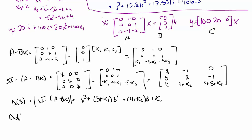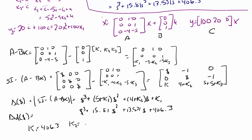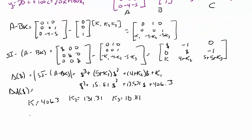We now equate coefficients with the desired characteristic equation S cubed plus 15.81 S squared plus 135.31 S plus 406.3. This gives K1 equals 406.3, K2 equals 131.31, and K3 equals 10.81. This can also be written as the vector K equals [406.3, 131.31, 10.81]. Note that K2 should be 131.31, corresponding to the corrected coefficient of 135.31.